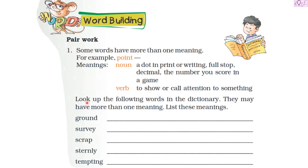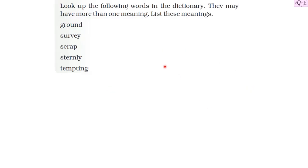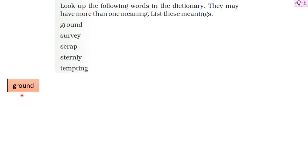Similarly, we have to look up the following words in the dictionary. They may have more than one meaning, and we have to list these meanings. The first word is 'ground.'